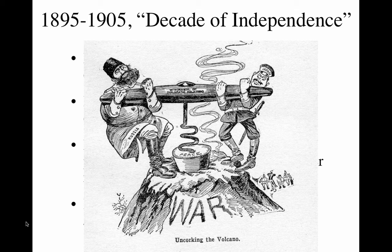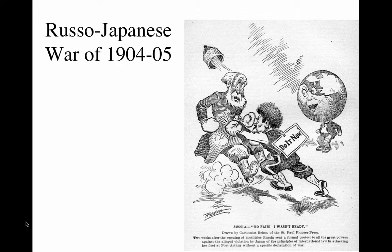By 1904, less than ten years after the end of the last war, Russia and Japan had gone to war, with the biggest prize again being the Korean Peninsula. Much to everyone's surprise, Japan won this war handily as well. A political cartoon shows young upstart Japan knocking old man Russia back on his behind, while the world looks on in shock.